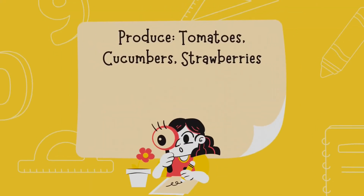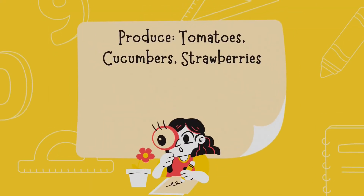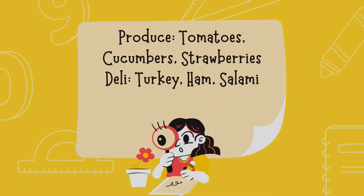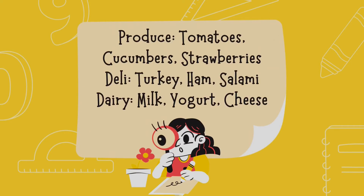This list might have been a bit easier, but were you able to memorize it all? Try chunking it. On a piece of paper, sort this grocery list into three different categories. Here's what I did to chunk these words — Produce: tomatoes, cucumbers, strawberries. Deli: turkey, ham, salami. Dairy: milk, yogurt, cheese.